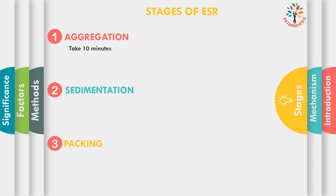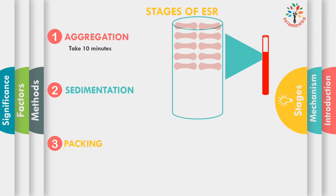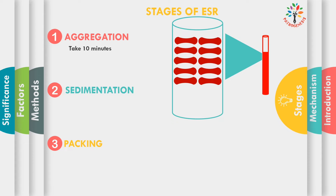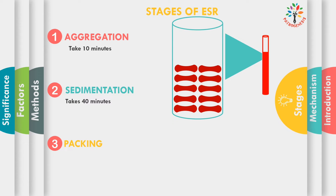When we keep anticoagulated blood in a vertical tube, there will be formation of rouleaux, in which RBCs stack together like a package of coins because of their biconcave shape. The initial 10 minutes are required for rouleaux formation. In the next 40 minutes, sedimentation occurs at a rapid rate, as the weight of the RBCs increases and they settle down rapidly.